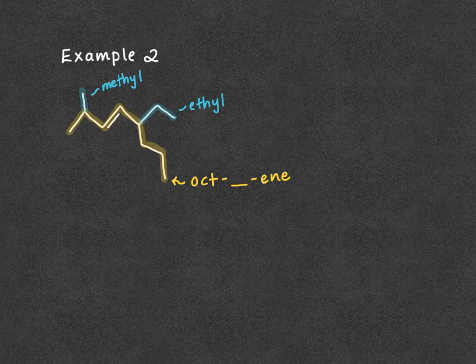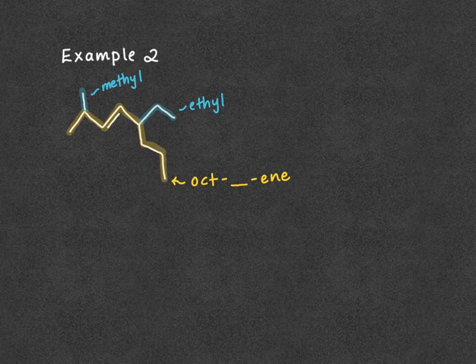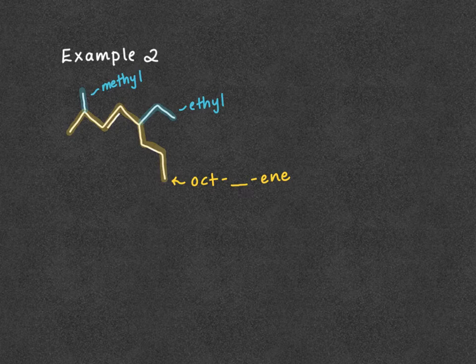Next, we're going to number that chain, making sure our double bond has the lowest possible number. Starting from the left side of the molecule, I hit my double bond on carbon 3. Starting from the right side, I don't hit the double bond until carbon 5. So I'm going to use left-to-right numbering so my double bond has the lowest number it can possibly have.